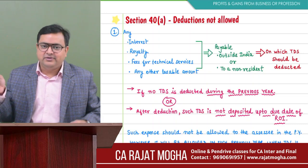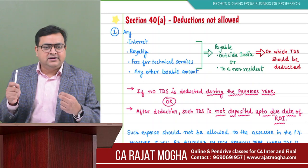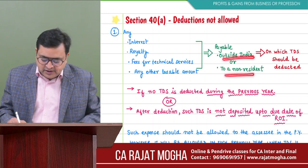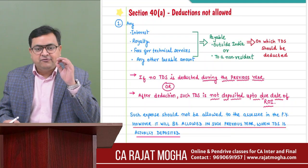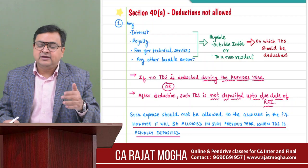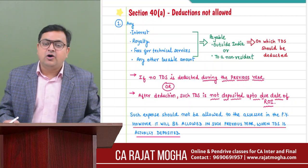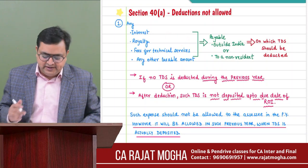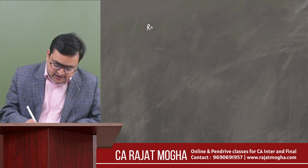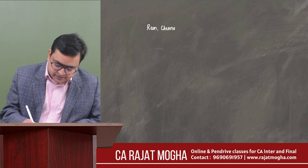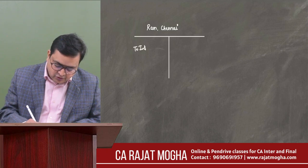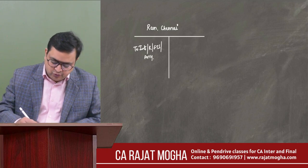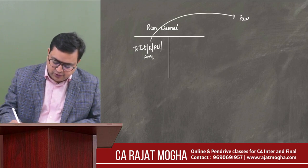The due date of ROI is that of the person who is paying — the tax deductor, that is Ram — not the person sitting outside India. So if Ram is paying outside India or to a non-resident on which TDS should be deducted, he should deduct TDS from this income. For example: Ram is sitting in India, running a business, paying interest, royalty, fees for technical services, or any other taxable amount to Paul who is sitting in the US.